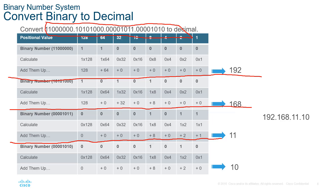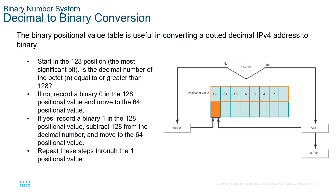For decimal-to-binary conversions, we start with a number and subtract. With 8 bits, we already know the largest number can only be 255 — anything larger won't fit in an 8-bit numbering scheme. So it has to be between 0 and 255 to fit in an 8-bit number block. 128 plus 64 plus 32 plus 16 plus 8 plus 4 plus 2 plus 1 is 255, so do keep that in mind.